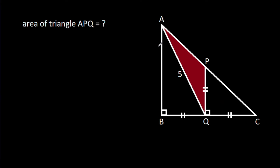In this video, we have been given that angle ABC is 90 degrees, angle PQC is 90 degrees, and BQ is equal to CQ is equal to PQ, and AQ is 5. We have to find the area of APQ.